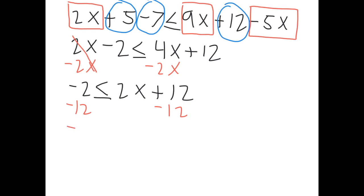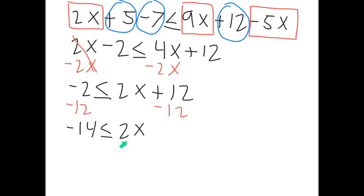That gives us negative fourteen is less than or equal to 2x. Then we need to get rid of that two, so we divide both sides by two, and that leaves us with negative seven is less than or equal to x.